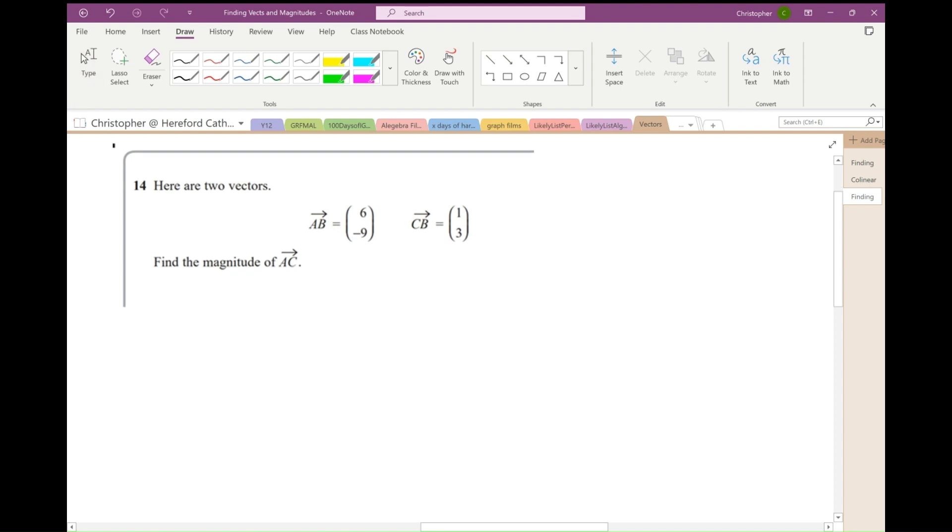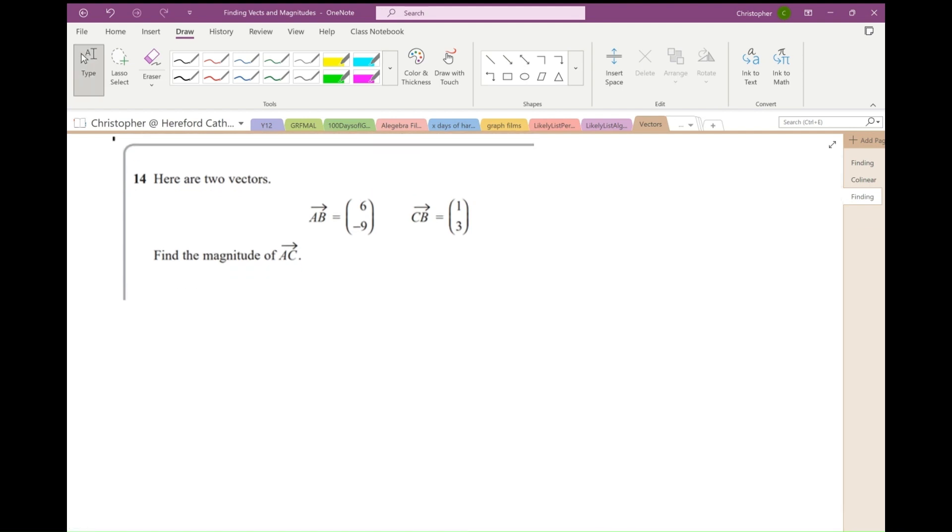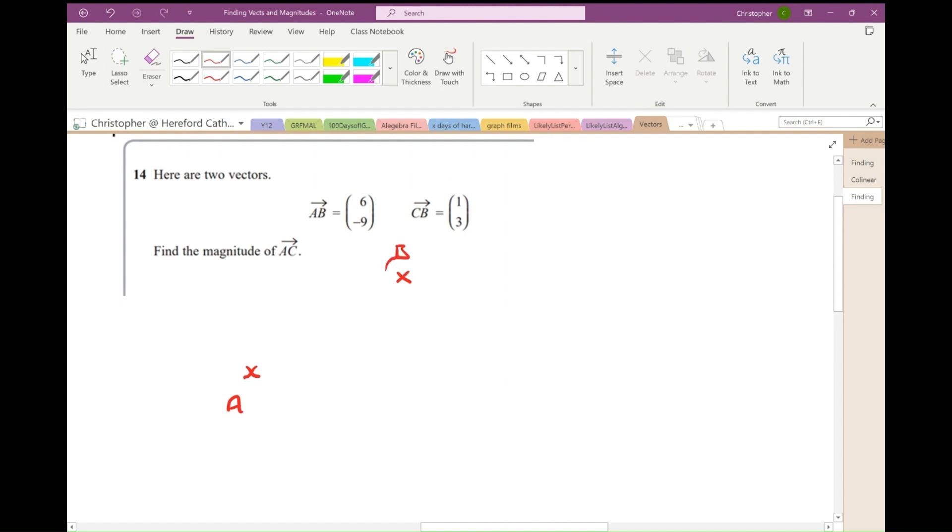Right, here's the question. Why not pause the film and have a go? My suggestion would be that you start by drawing a diagram. Okay, I'm going to draw a diagram. So I've got the point A. It doesn't really matter where I put that. And I've got the point B. I'll put that here. And I'm told the vector AB. So that is this vector going from A to B is (6, -9).